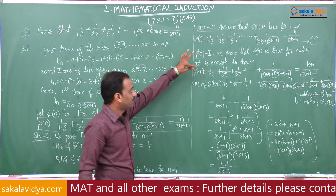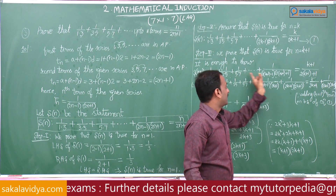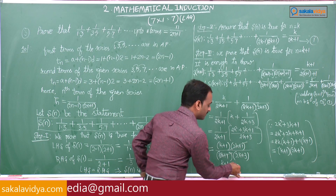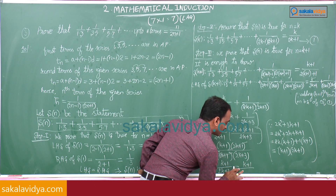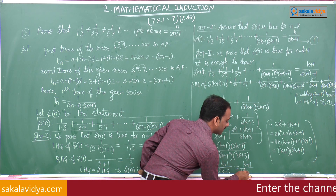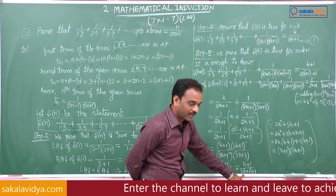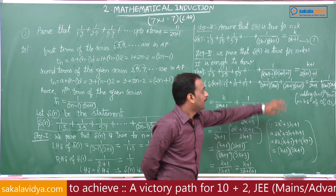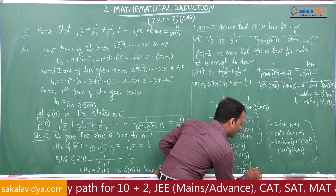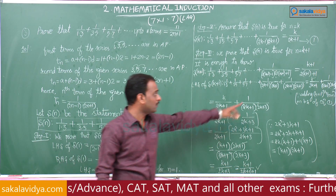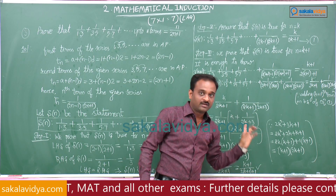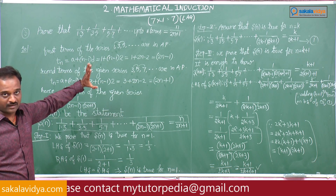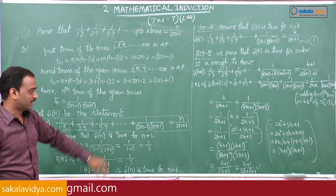The (2k+1) terms cancel, giving (k+1)/(2k+3). This equals (k+1)/[2(k+1)+1], which is the RHS of S(k+1). Therefore LHS of S(k+1) = RHS of S(k+1), so the given statement is true for all n belonging to natural numbers by the principle of mathematical induction.